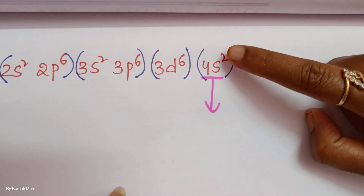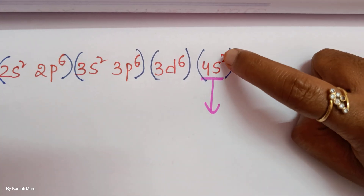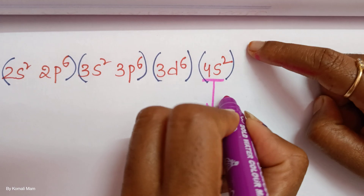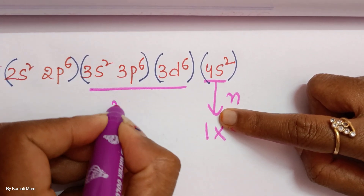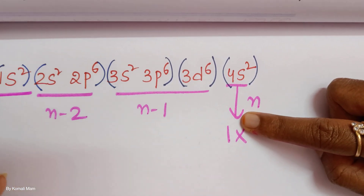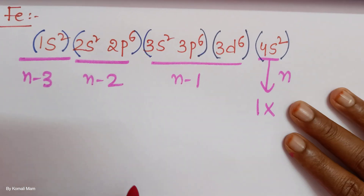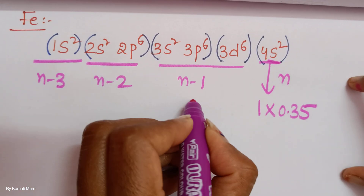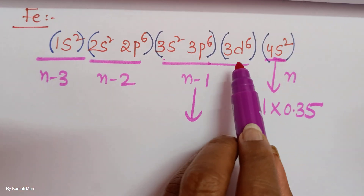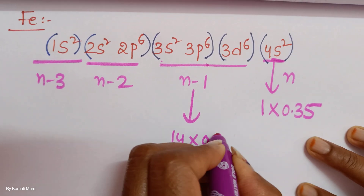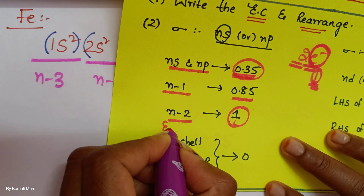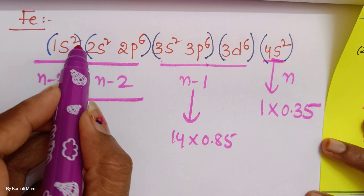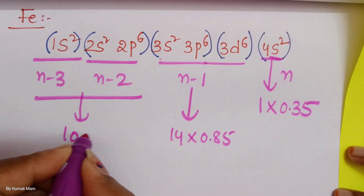Now let us calculate the sigma value for the last 4S electron of iron. Other than that one electron, 1 electron remains in the same shell (contributing 0.35). For the n−1 shell — 3d and 3s/3p together — there are 14 electrons (contributing 0.85 each): 14 × 0.85 = 11.90. For n−2 and n−3 shells, the count is 2+2+6 = 10 electrons contributing 1 each: 10 × 1 = 10.